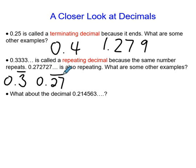Maybe you thought of 0.5555, which goes on forever, or 0.5 with a bar above it. Now, what about 0.214563 that we had on the last slide? Does it terminate?